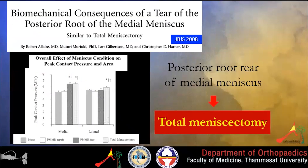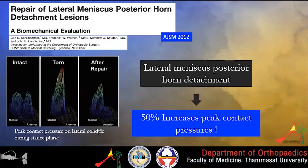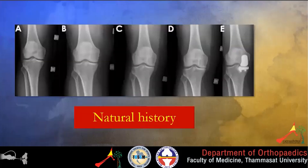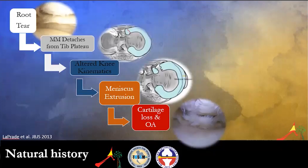A biomechanical study by Robert et al. in 2008 found that the tear of the posterior root of the medial meniscus is comparable to total meniscectomy in terms of contact stress. A similar trend was seen on the lateral side as well. There is a 50% increase in peak contact pressure after the lateral meniscus posterior root is detached, and after repair there is recreation of near-native contact pressure.